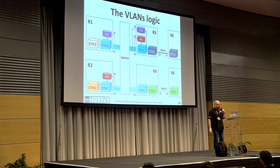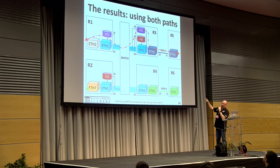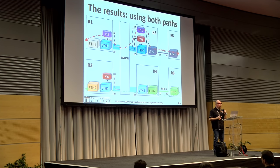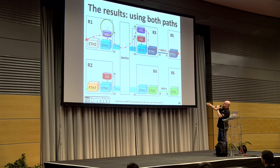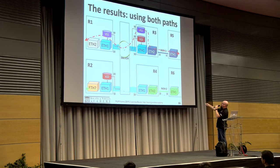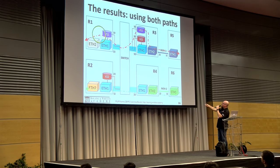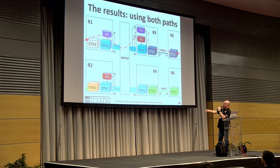If you calculate all the path costs — which you can do by downloading the slides — the result is: from router 1, the cheapest path is 10 + 20 = 30. From router 2, using Ethernet 1 it's cheaper: 10 + 20, with the opposite direction at 10 + 30. So router 1 will use only path 1 through VLAN 11 in this example, and router 2 will use Ethernet 1.